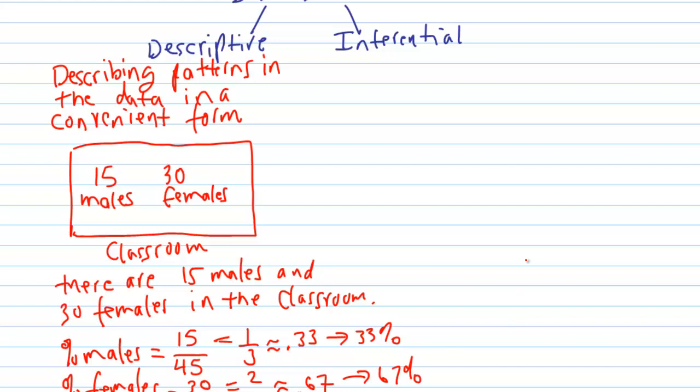So again, the reason that this is an example of Descriptive Statistics is that all you're doing is describing something about the data you collected, and you try to do it in a convenient form — a form which makes sense to the people you're trying to convey the information to.